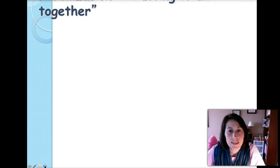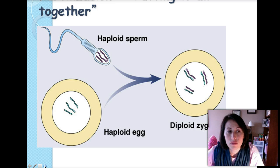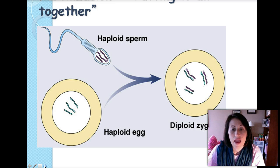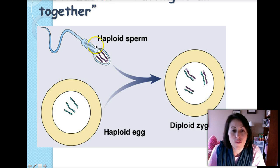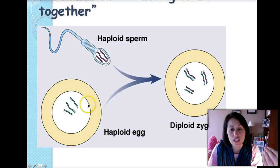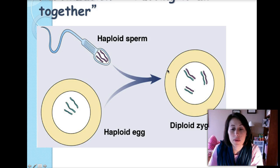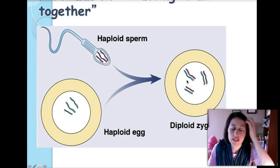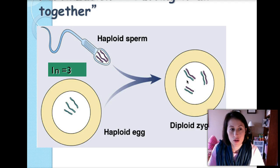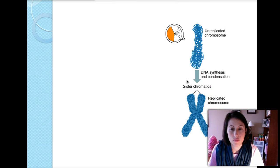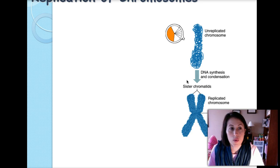Fertilization puts it all together. If we have a haploid sperm cell and a haploid egg cell, when those come together during fertilization we end up with a diploid cell — restoring the diploid number. A fertilized egg cell is called the zygote, so we end up with a diploid zygote.